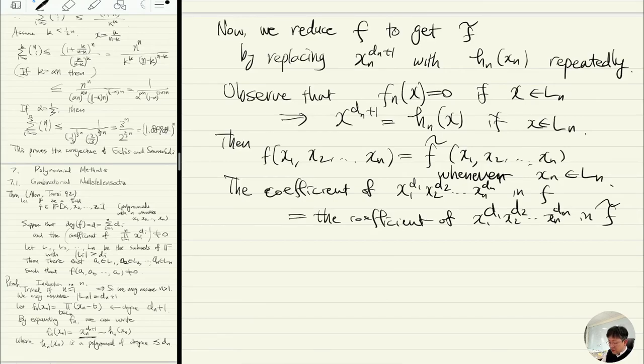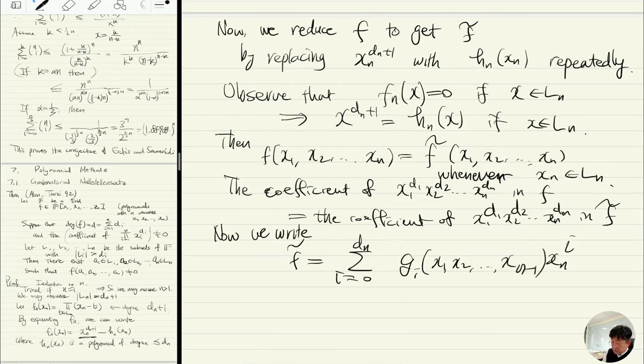Now we write f-tilde as a sum of the polynomials in terms of xn, from xn to the i from zero to dn, and we have gi(x1,...,xn-1). Simply collect all the terms according to the degree of xn.